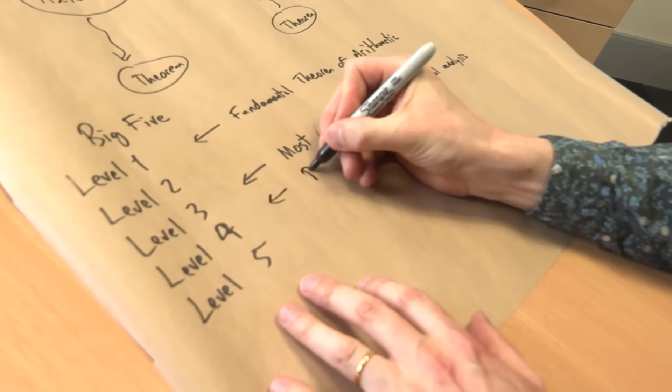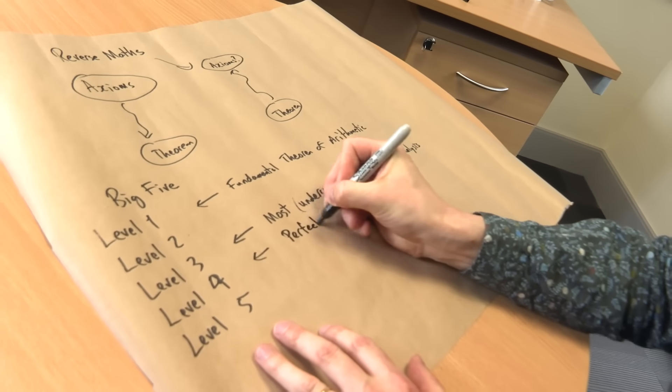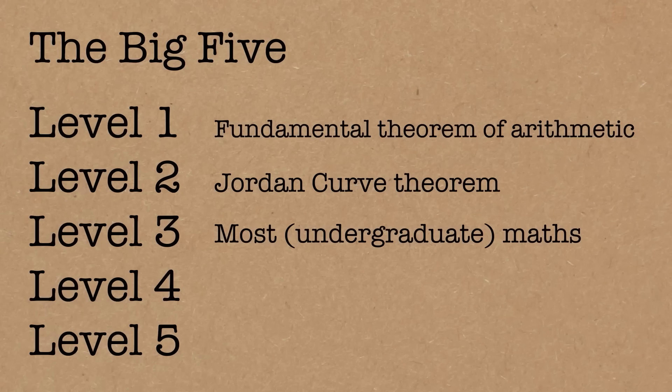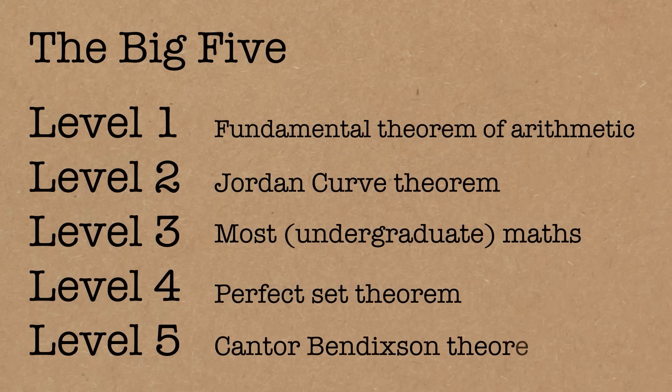It's only once you get more arcane, logically complicated areas that you need to go further than that. There are places where you need the higher levels. So you get to level four, we get the perfect set theorem, for example. I don't want to get into it, but it's not the sort of thing that most mathematicians are going to run into. But if you want to prove it, you need a logically stronger axiom scheme. And level five, there's some stuff here like the Cantor-Bendixson theorem. So these things do arise, but it's pretty rare and it's in fairly specialized areas.